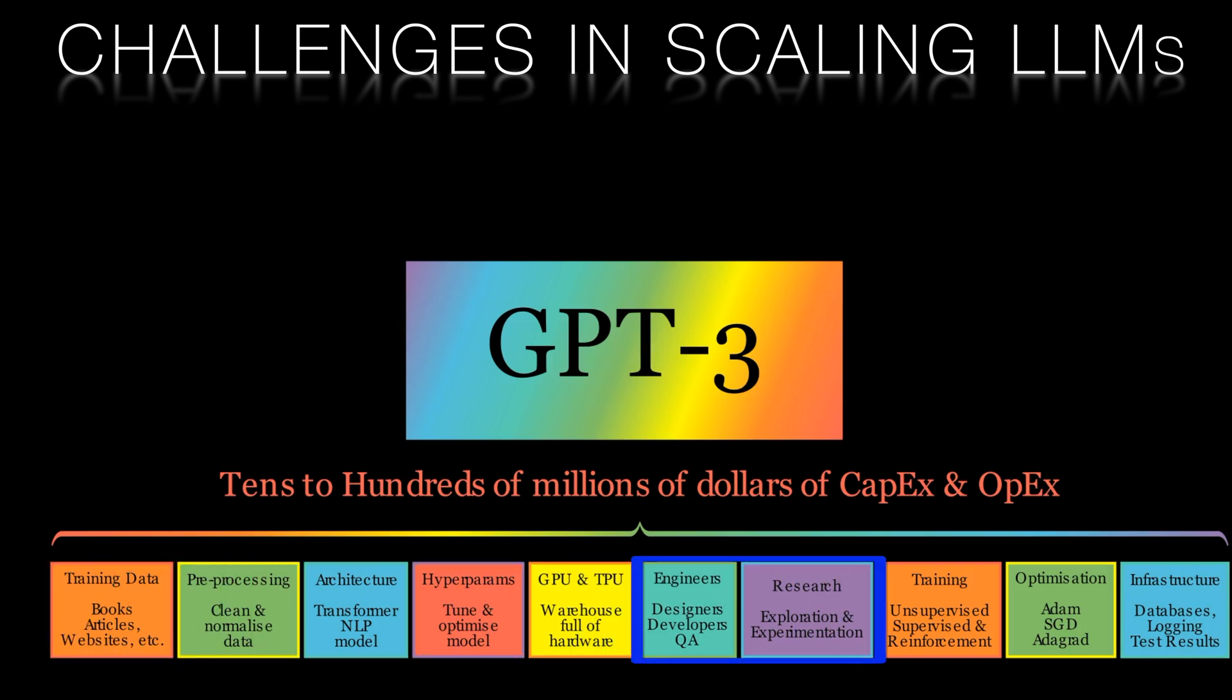The demand for skilled labor is another factor contributing to the scaling challenges of LLMs. Experts with knowledge in artificial intelligence, machine learning, and deep learning are required to develop, train, and fine-tune these models. As the field expands, there's an increasing need for well-trained professionals which can drive up costs due to competition for talent. So keep watching those Lucidate videos, folks.